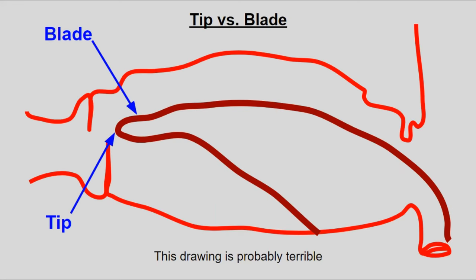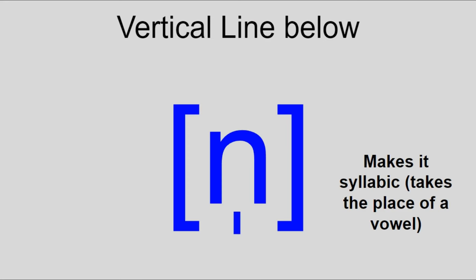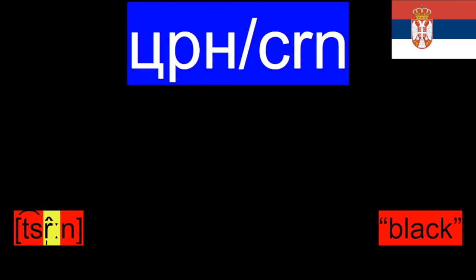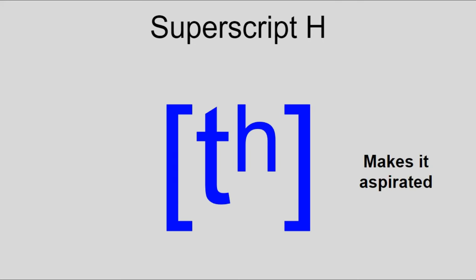A vertical line below the consonant means that it's syllabic, like in American English 'bird' or Serbian 'trn'. This can only happen to sonorants. After that, we have the superscript letters indicating important suprasegmental features.